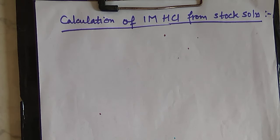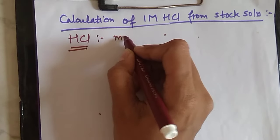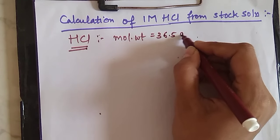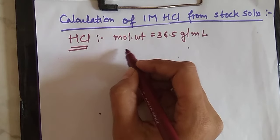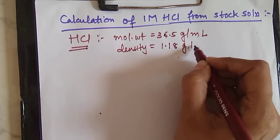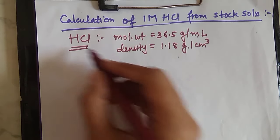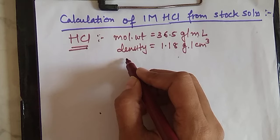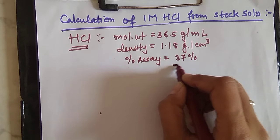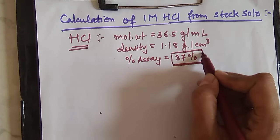For this, first of all we know that certain information is written on the bottle. What are these? Molecular weight — the molecular weight of HCl is 36.5 grams per mol. Then density will be written on the bottle: density is equal to 1.18 grams per cubic centimeter. And one more thing mentioned on the bottle of concentrated acids used in practicals is percentage SA, which is equal to 37%. This means that the composition of HCl in this bottle is 37%.